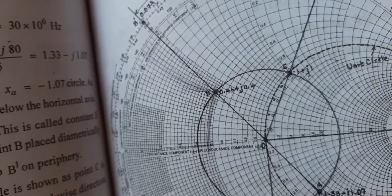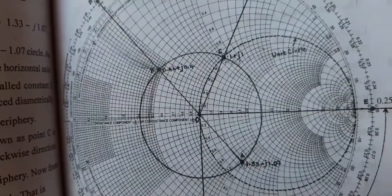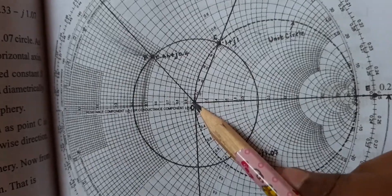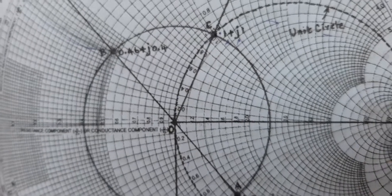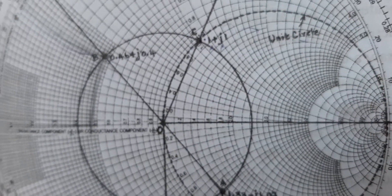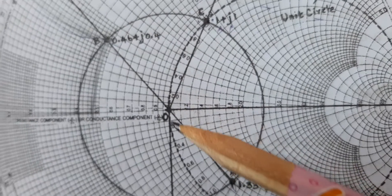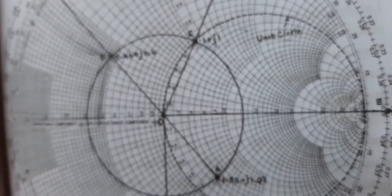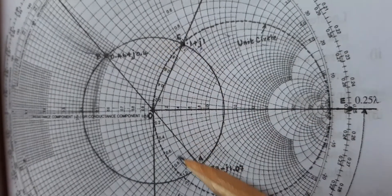In order to find the distance in single step matching, it is very important to draw the unit circle. The unit circle is centered at the center point with a value of 1. Mark this as the unit circle by drawing around the constant circle value of 1.